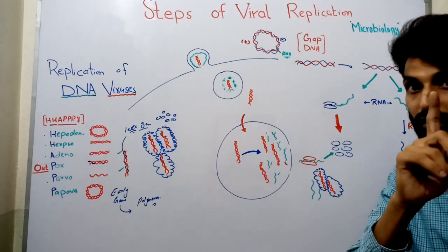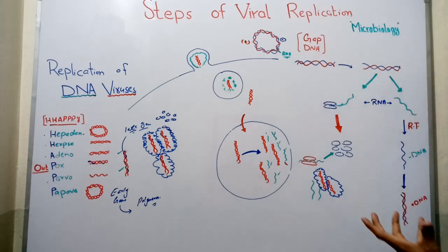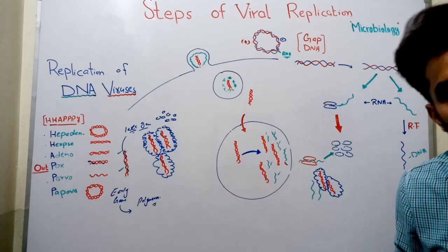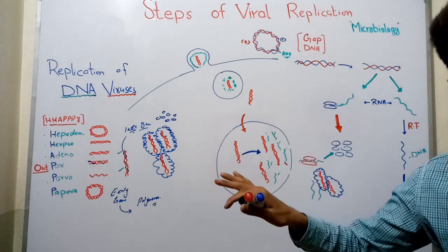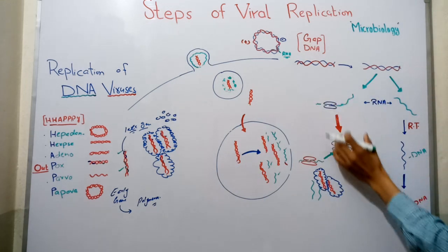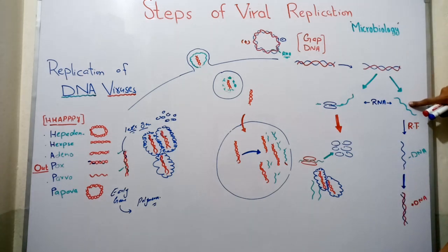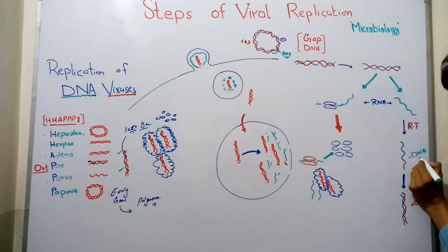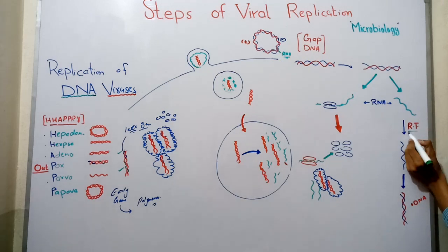Now something very interesting happens. This complete double-stranded DNA, after filling the gap, will be converted into RNA through transcription. Two things then happen simultaneously: first, this RNA will attach on the ribosome and new proteins will be formed; second, at the same time, this RNA will be converted into a negative DNA strand — the blue negative strand — with the help of the enzyme reverse transcriptase.